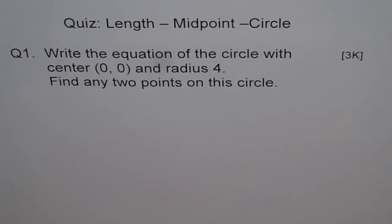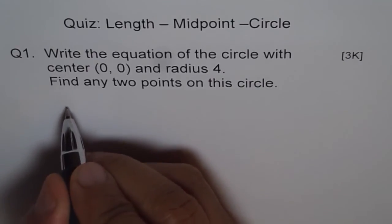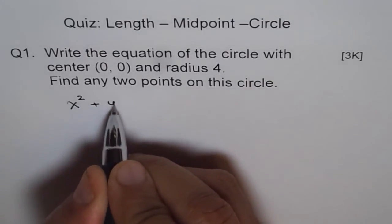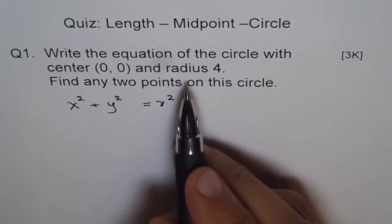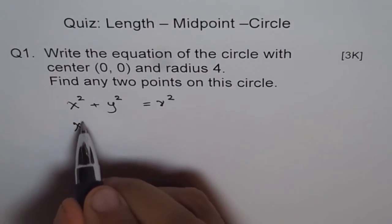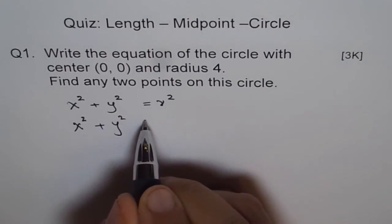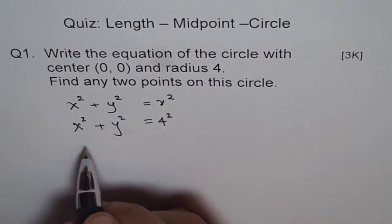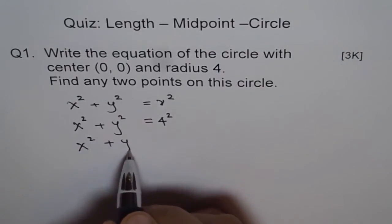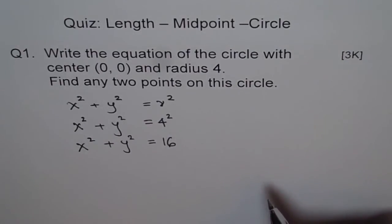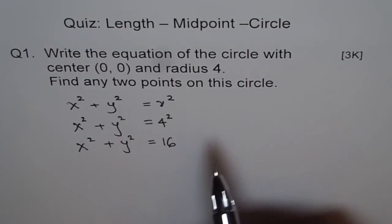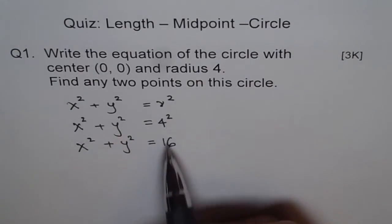This is a very simple question but I have seen students making mistakes here. The equation of the circle is x² + y² = r². With radius 4, we can write x² + y² = 4². The equation finally becomes x² + y² = 16. That's the equation for part A. Many times students write 4 instead of 4², making a mistake.